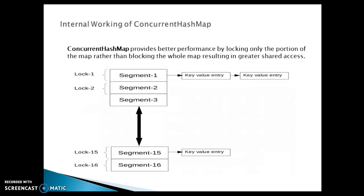Here I have one image. I will try to explain how ConcurrentHashMap works internally using this diagram. ConcurrentHashMap provides better performance by locking only a portion of the map rather than blocking the whole map, resulting in greater shared access. You can see locks from 1 to 16 and different segments from 1 to 16 — that is the default number of segments. If rehashing happens, the number of segments will be increased. Rehashing relates to concepts like load factor and hash collision.